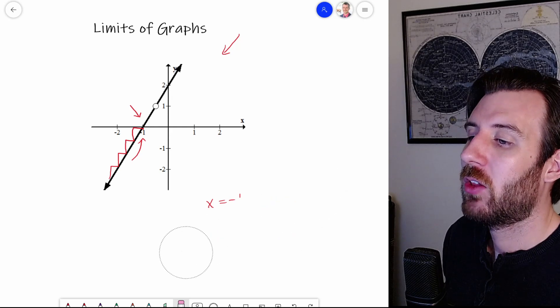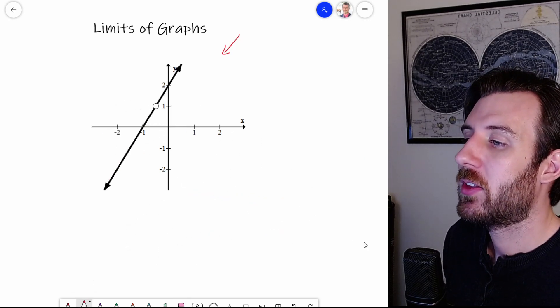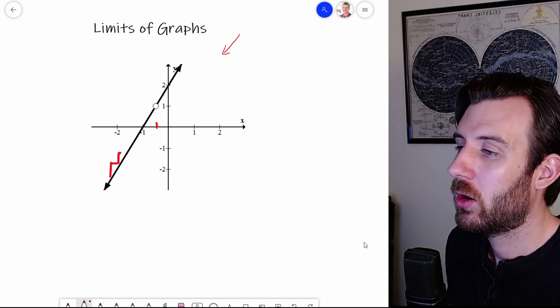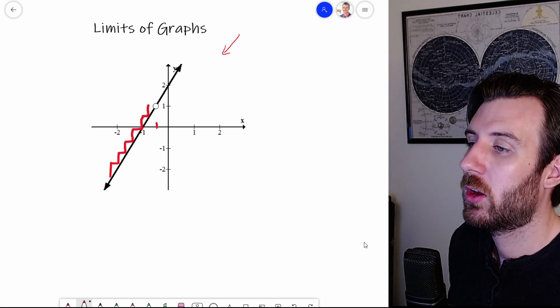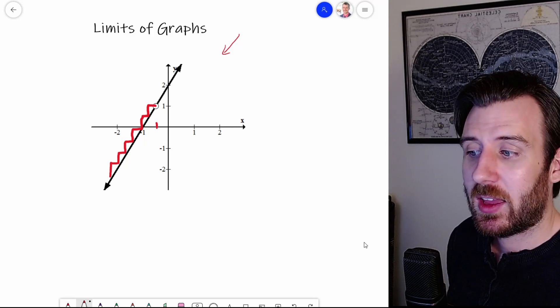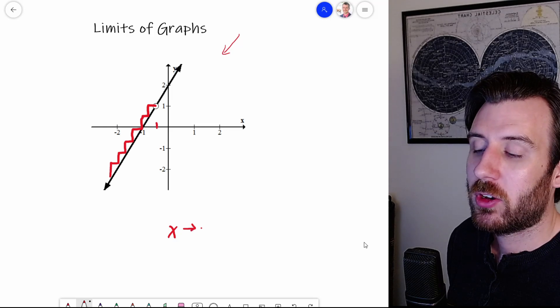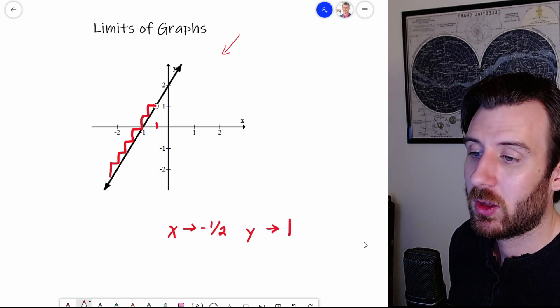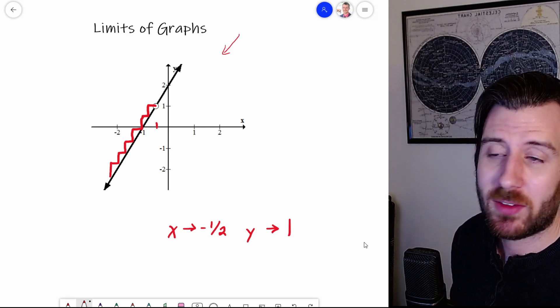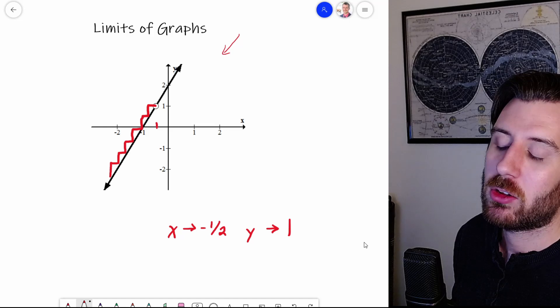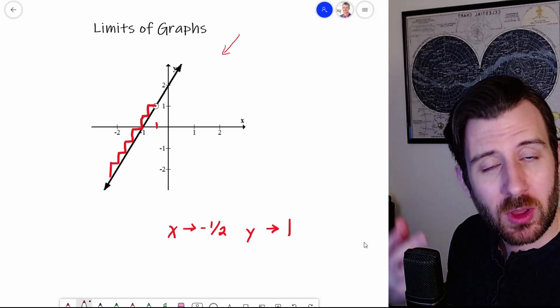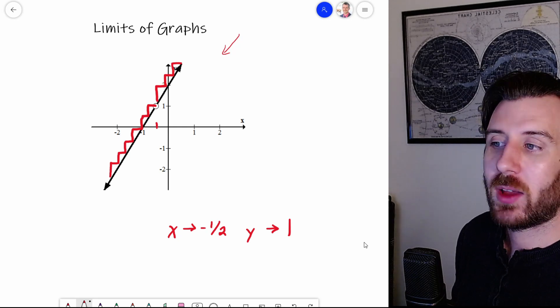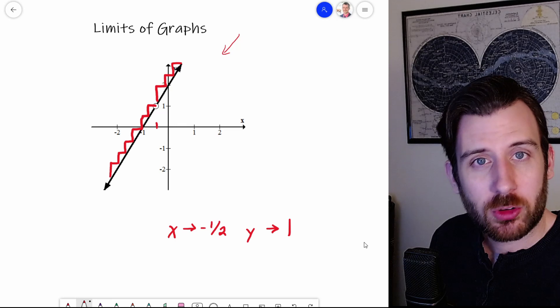But now let's look at a harder situation. Let's now look at what happens at the x value of negative one half. So again, we're going to look at this as our value of approach. And I'm going to say that I am approaching, approaching, approaching, and I have no problem. In fact, as x gets closer and closer to negative one half, y gets closer and closer to the limiting value of one. So one is my limit. It doesn't matter that there's not a graph there. It just matters simply that as I get closer and closer to an x value, I get closer and closer to a limiting y value. And this is also true when you come at it from the other direction.